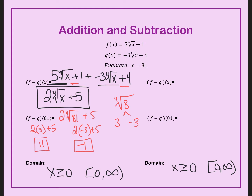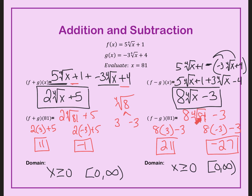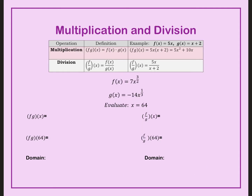Go ahead and pause this video and try the subtraction. When subtracting g of x, make sure to distribute your negative. After distributing, combine like terms. Now plug in 81 again — don't forget you'll have two solutions. The fourth root of 81 is going to be negative 3 and positive 3. When I plugged them in, I had 24 minus 3, and negative 24 minus 3.